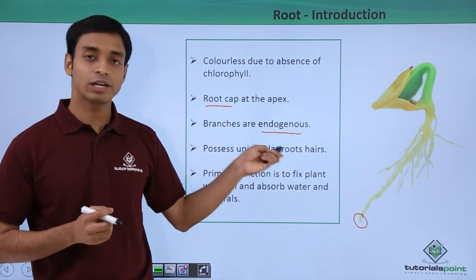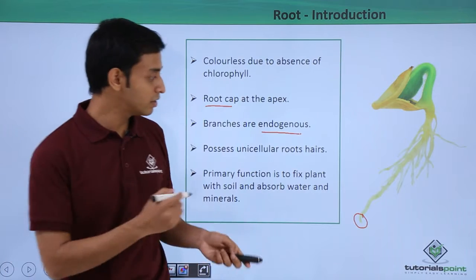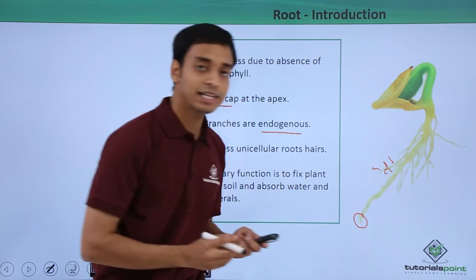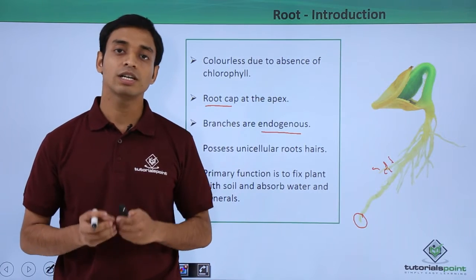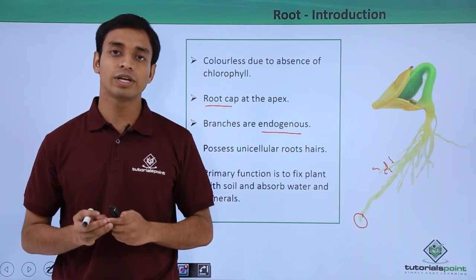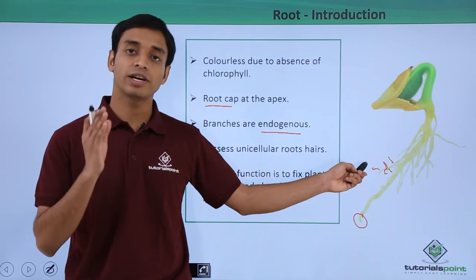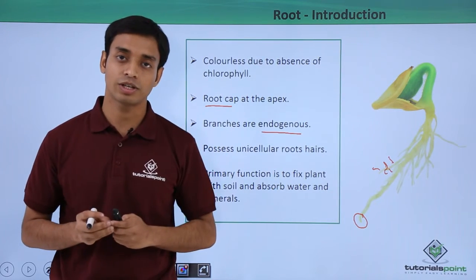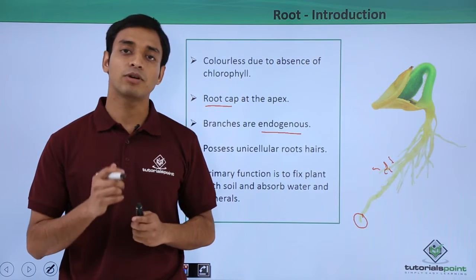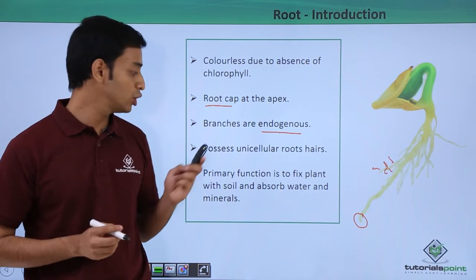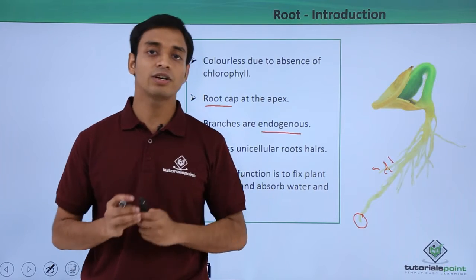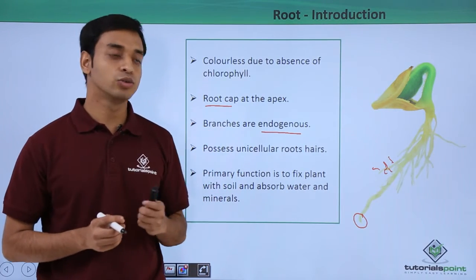Roots possess unicellular root hairs. These branches have very small, minute hair-like structures known as root hairs. Interestingly, these root hairs are unicellular tubular structures — each root hair is made up of a single cell.